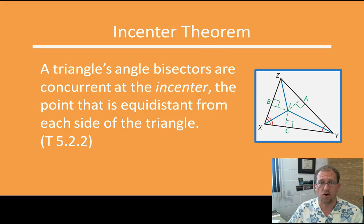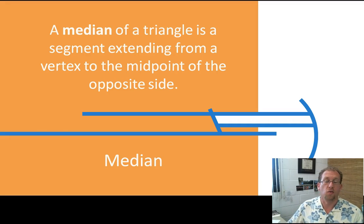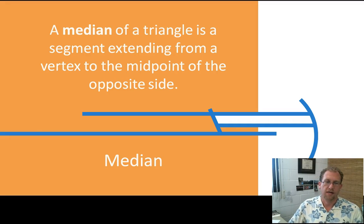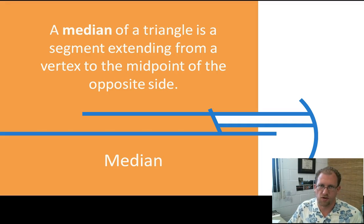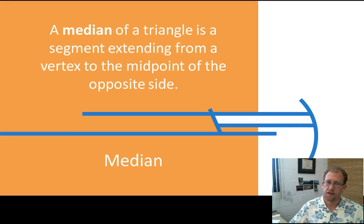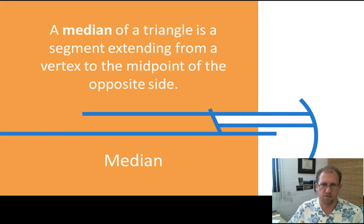Now we're going to look at another way of finding the center of a triangle. We have three centers so far; we're going to look at one more. A median of a triangle is a segment that extends from the vertex to the midpoint of the opposite side. Don't get medians and altitudes confused — altitudes strike the opposite side at a 90-degree angle, while medians strike the opposite side so that they cut that side in half. Sometimes altitudes are also medians, but that's not normally the case.